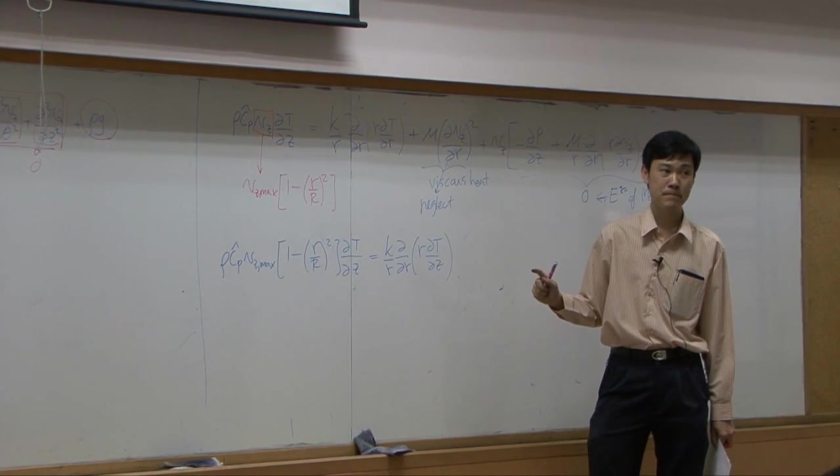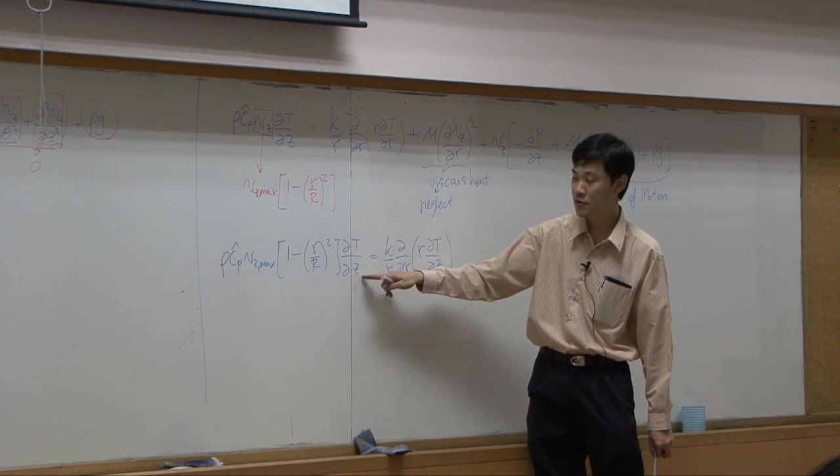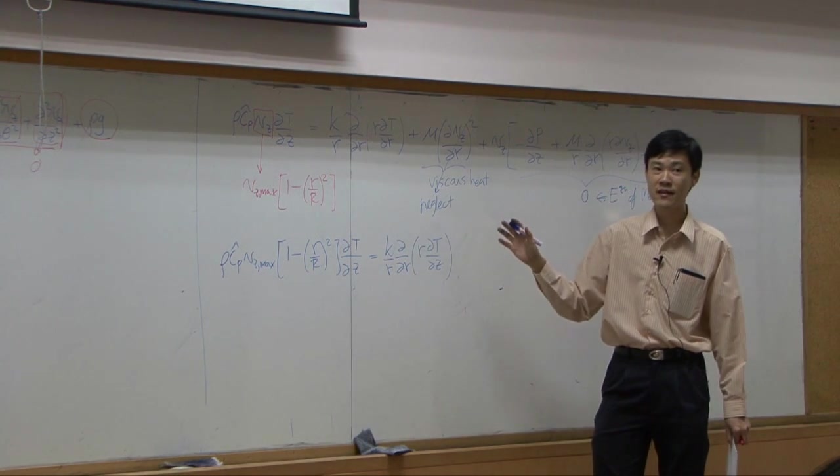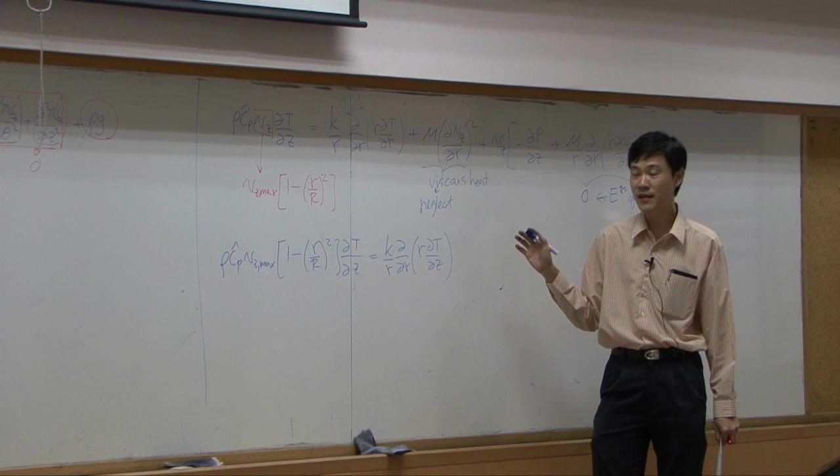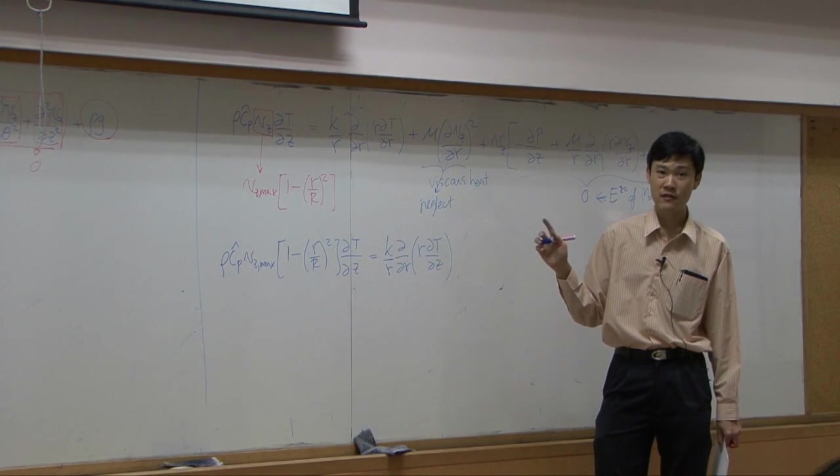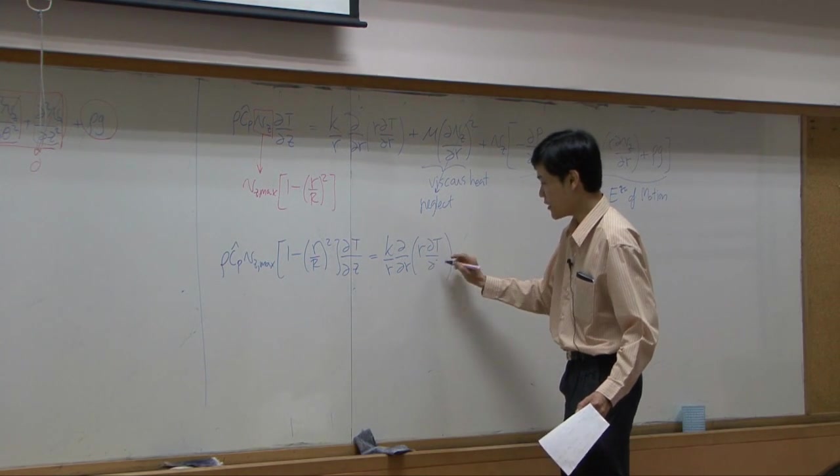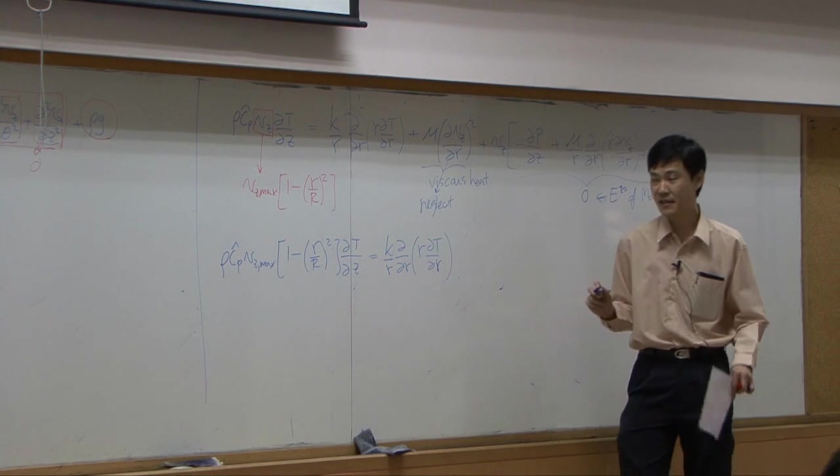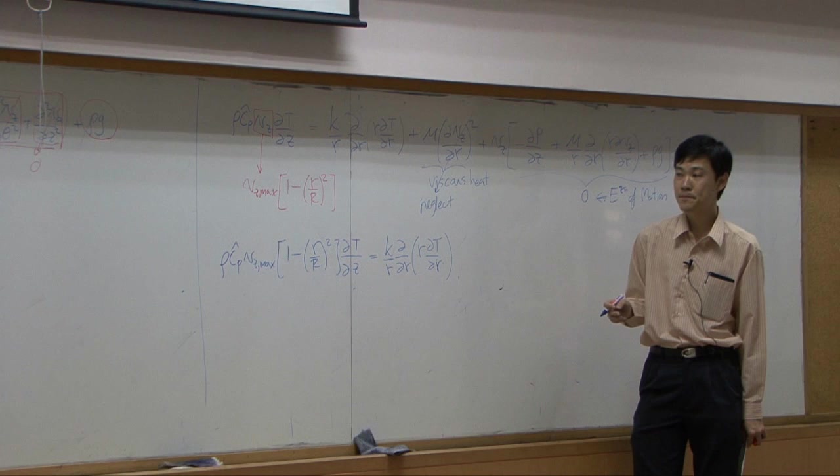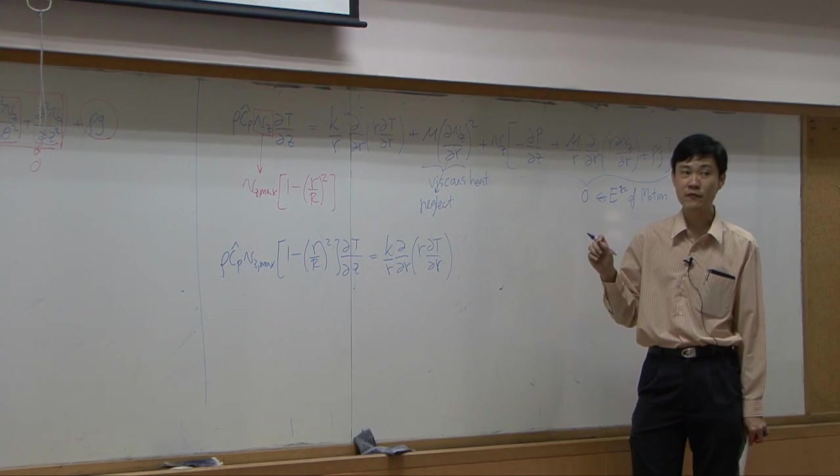Can we say that this is total differentiation of temperature with respect to z? This side is function of z, this side is function of r. And therefore, if they are equal, supposed to be constant. Can we do that? No, because temperature changes with respect to both r and z. So therefore, it must be kept in partial differentiation form.